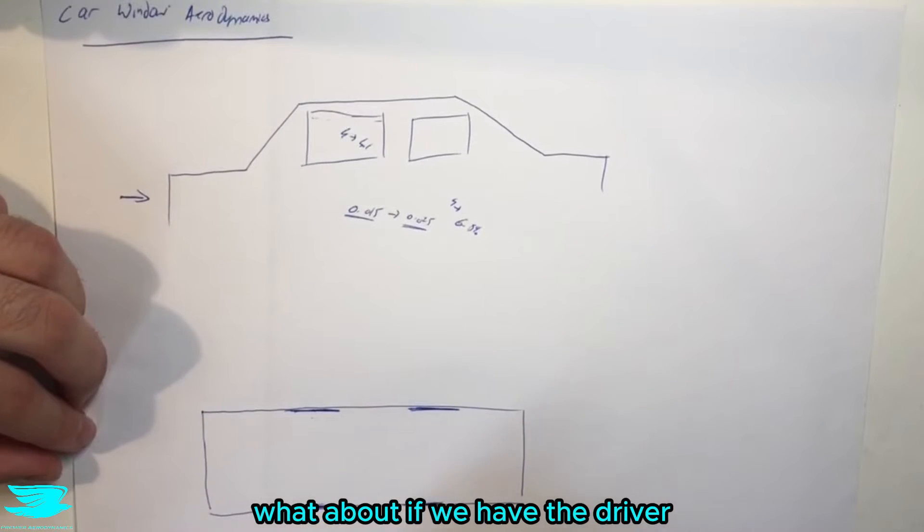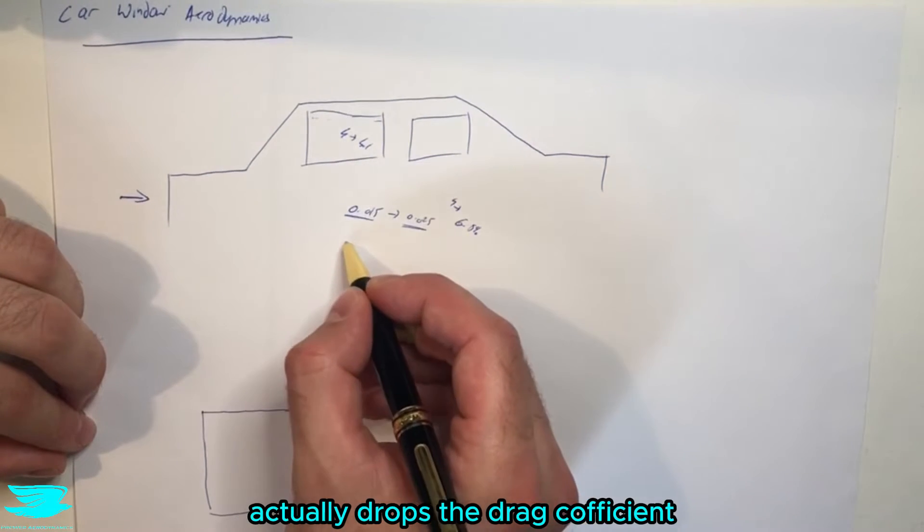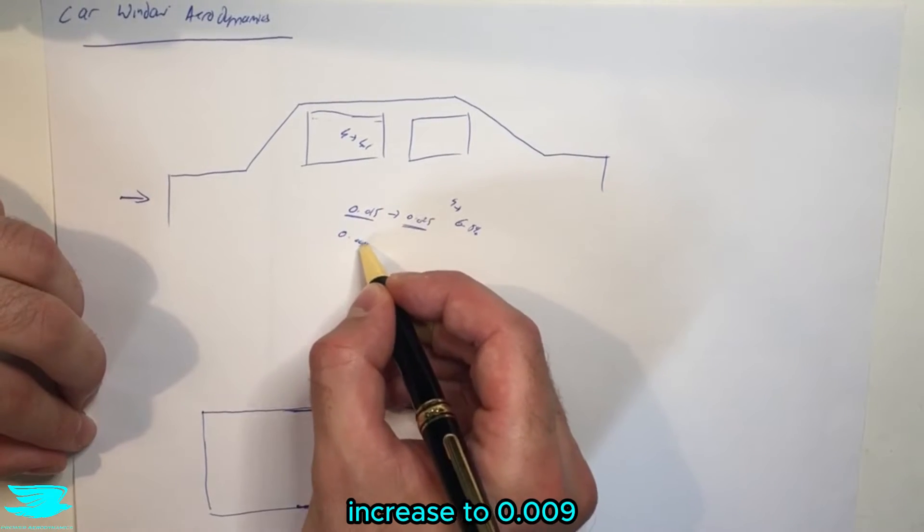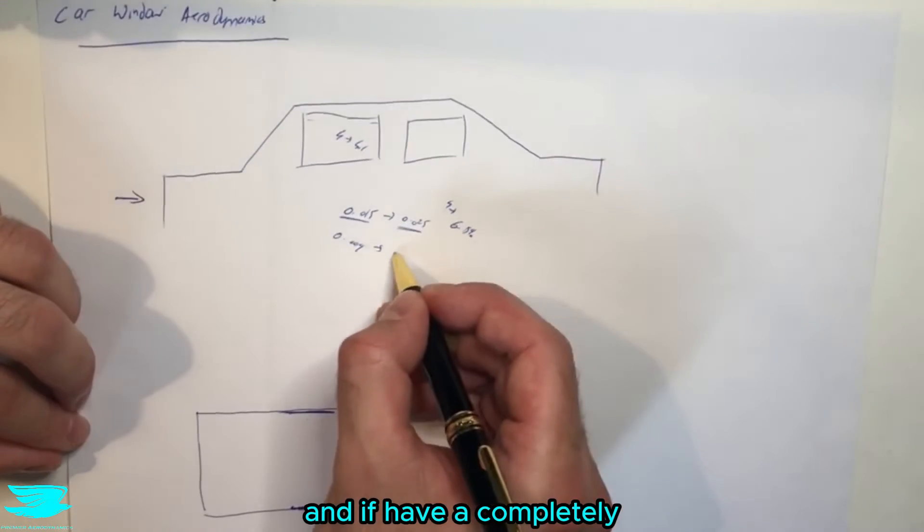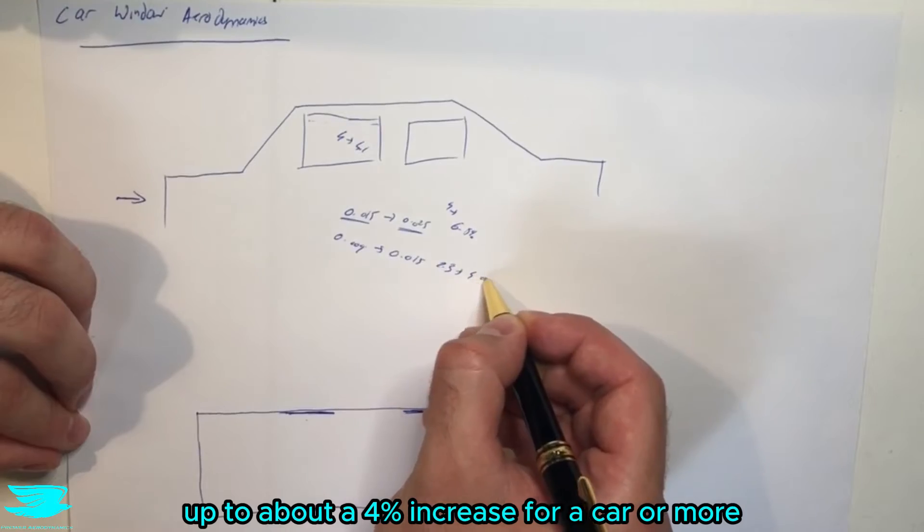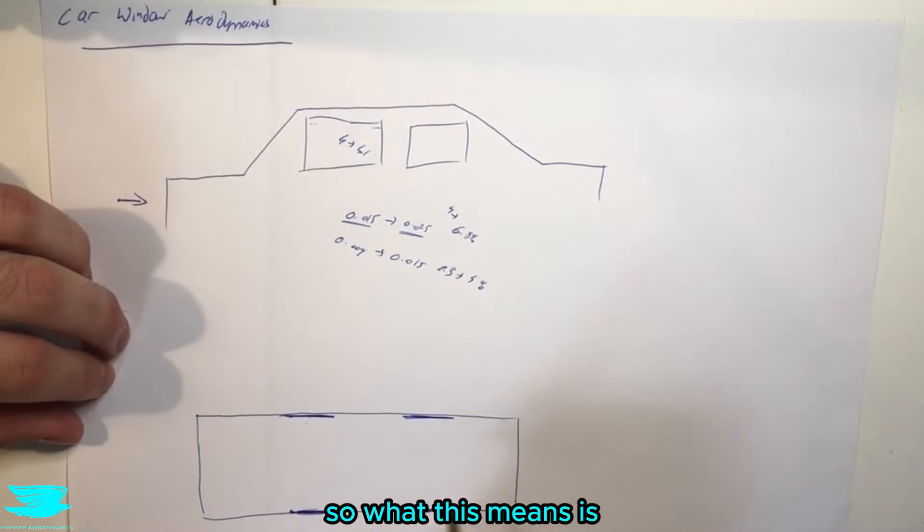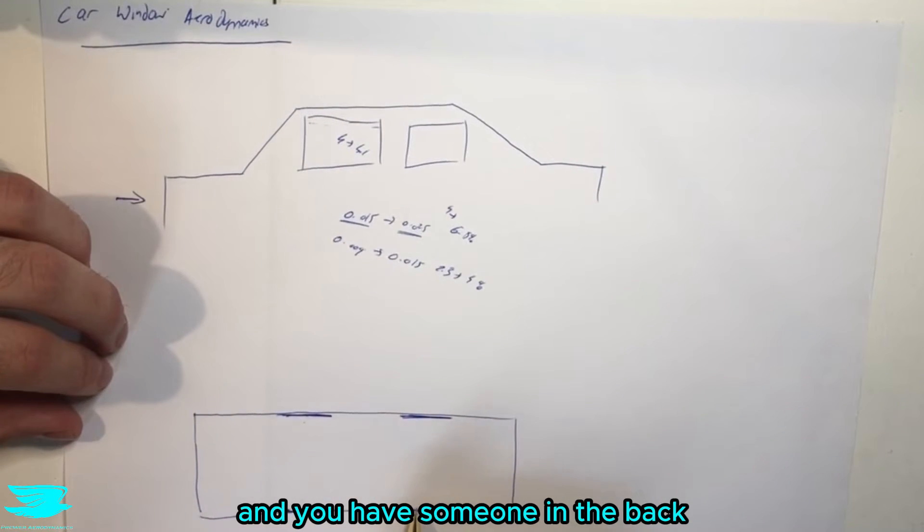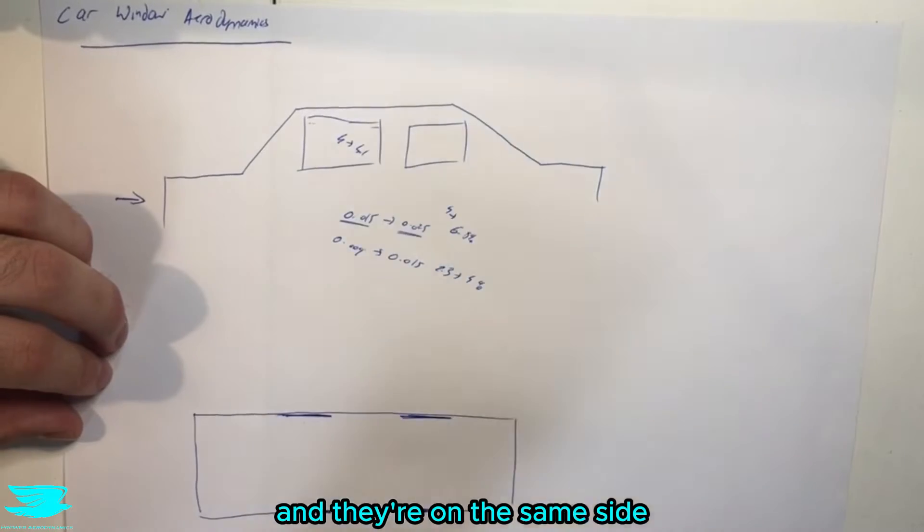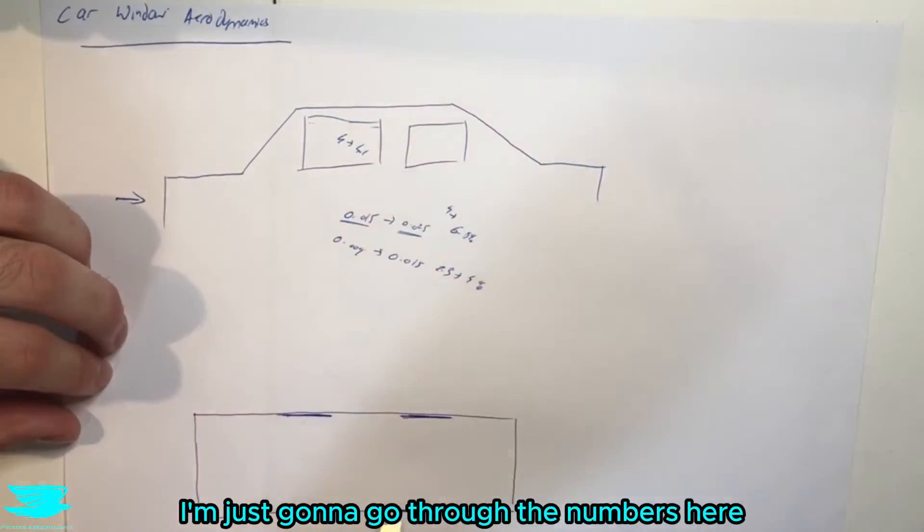What about if we have the driver plus the rear passenger on the same side? Well, surprisingly, having them open at a crack actually drops the drag coefficient increase to 0.009, and if you have it completely open, to about 0.015. So that means we have a 2.3% increase up to about a 4% increase for a car or more if the drag coefficient is much lower than about 0.35. So what this means is if you have the driver's side window open and you have someone in the back who wants to have their window open as well, and they're on the same side, let them do it because you will not increase the drag really, and potentially even reduce the drag.